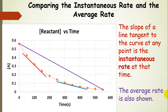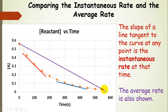We demonstrated that by showing two instantaneous rates of reaction — one toward the beginning of the reaction, one later on — and we can see that they have different slopes. This slope is steeper than the other one; the reaction is proceeding at a faster rate early on. The purple line shows the average rate of reaction over the whole course, so the average rate that reactants are converted to products.